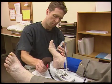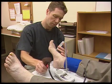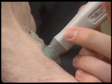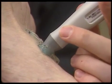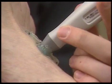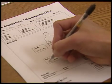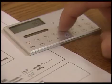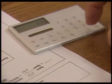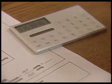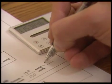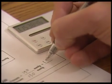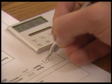On some patients, it may be easier or necessary to use the dorsalis pedis artery on top of the foot. The ABI is now calculated for each leg. Using a calculator, divide the ankle pressure by the higher of the two arm pressures. Alternatively, you can use an ABI chart to determine the ABI.